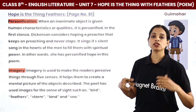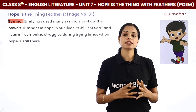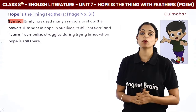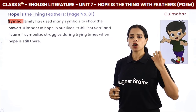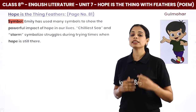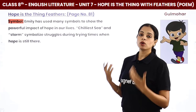The last literary device is symbolism. Emily has used many symbols to show the powerful impact of hope in our lives. The chillest land and the storm symbolize the struggles of our life. When a very difficult struggle comes into our life, there is still hope — the belief that we will find a way to get better. So that is symbolism. These were the poetic devices used in this particular poem.